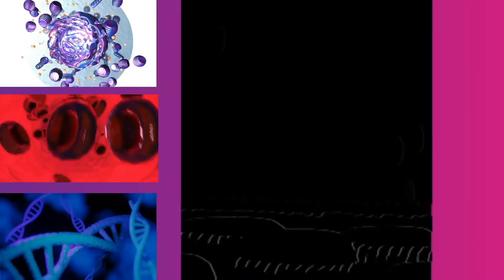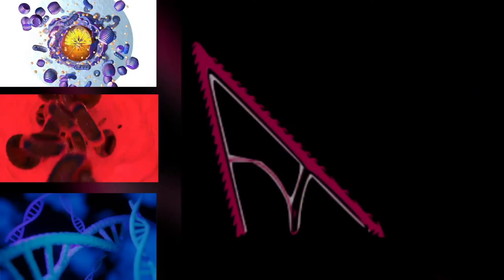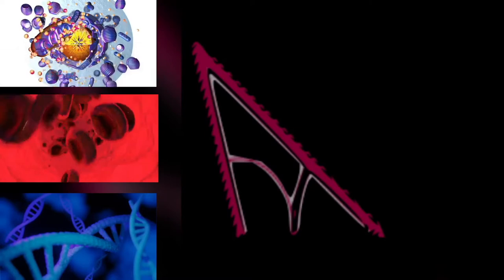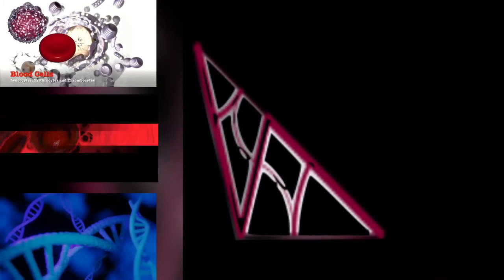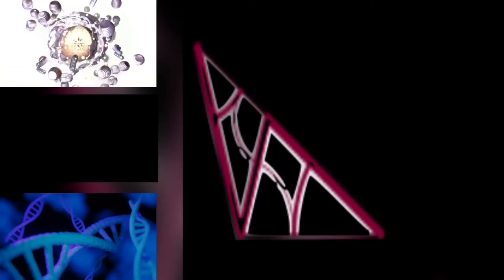Cell Wall. The cells of plants and algae, fungi, and most chromalveolates have a cell wall, a layer outside the cell membrane, providing the cell with structural support, protection, and a filtering mechanism. The cell wall also prevents overexpansion when water enters the cell.